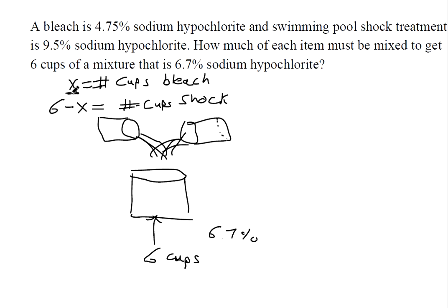Right, because if x is one cup, then we better have five cups of shock treatment, since the total is supposed to be six cups. Now we can break it down by percentages: 0.0475.